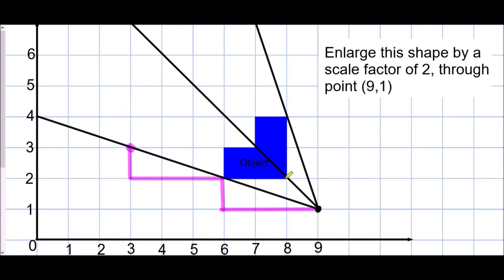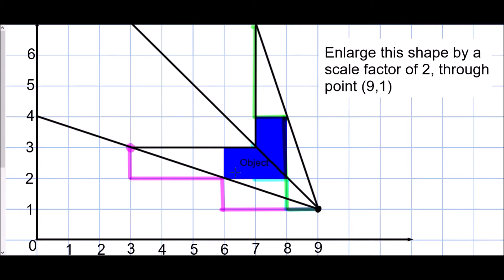For the next corner, that's left one, up one. So I do the same again — left one, up one — twice. There's the new corner. For the last corner, that's left one, up three, so I go left one, up three, and it brings me right up here. That gives me three corners, but that is only the bottom and right-hand side of this shape. We know it's a scale factor of two, which means all sides must now be twice as long.